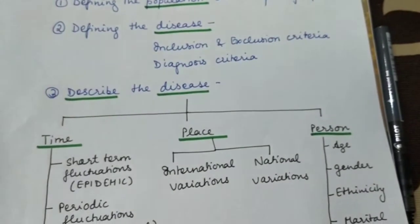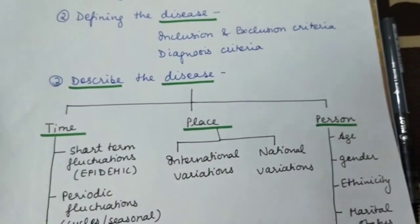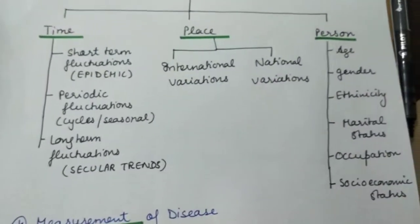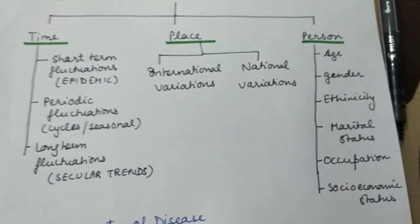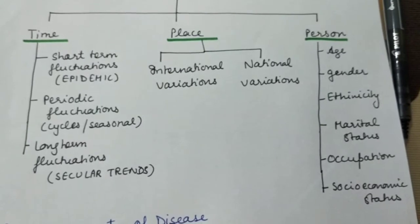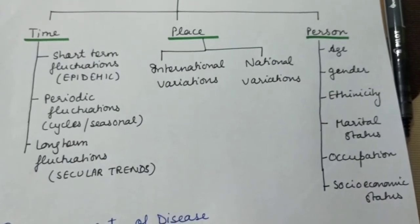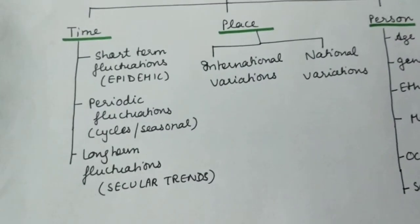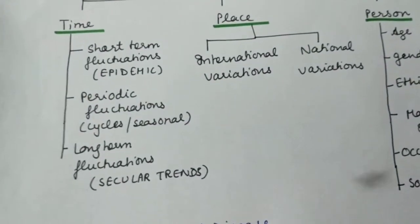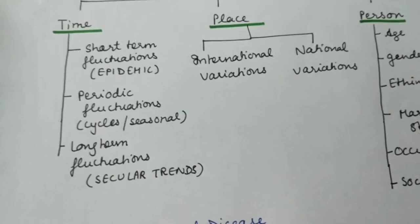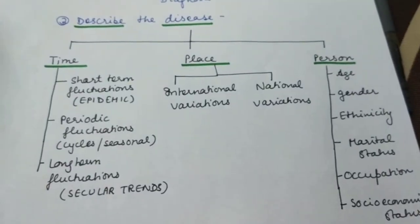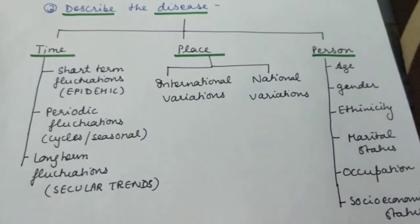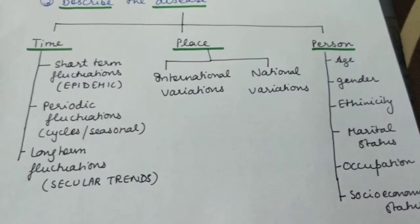After defining the population and the disease, you now describe the disease — this is the most important step. You describe the disease in terms of time, then in terms of place, and then in terms of person. In terms of time, there are three types of fluctuations. The first is short-term fluctuations, also known as an epidemic.